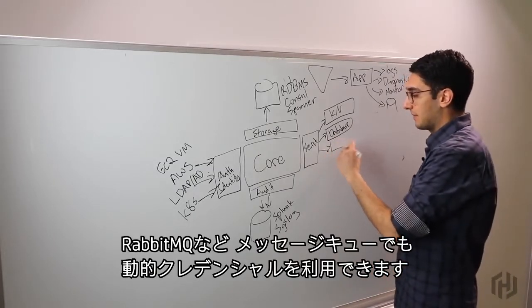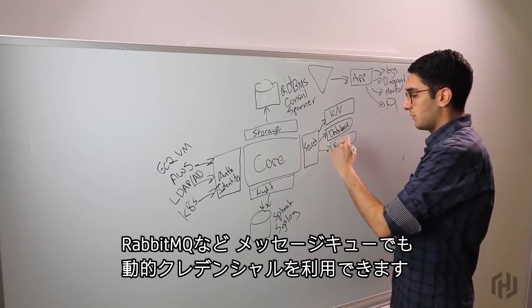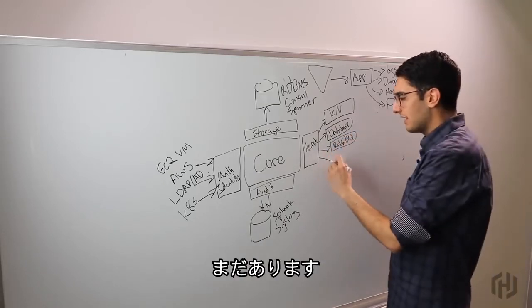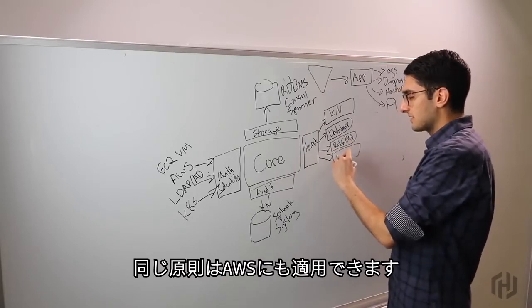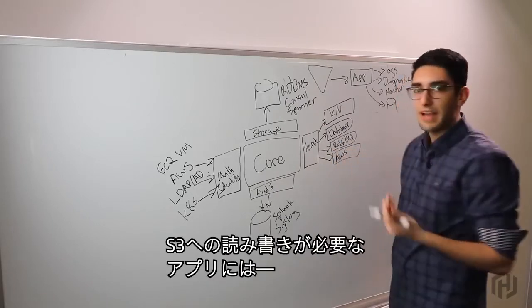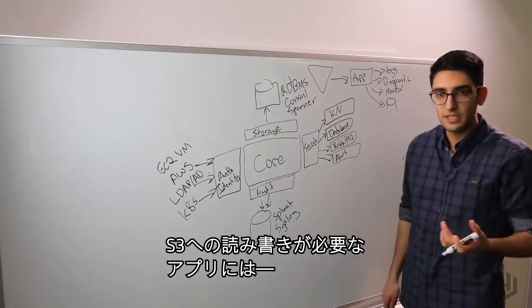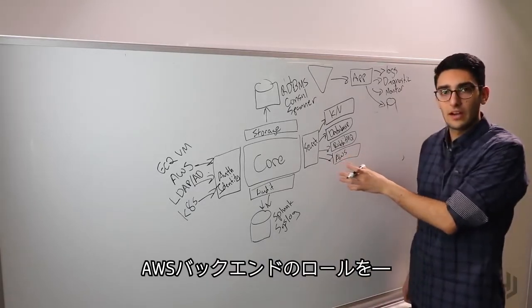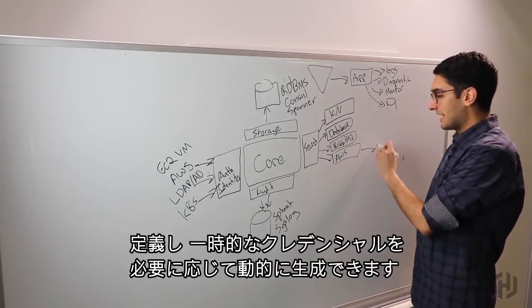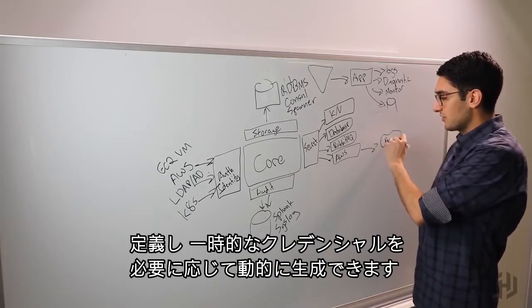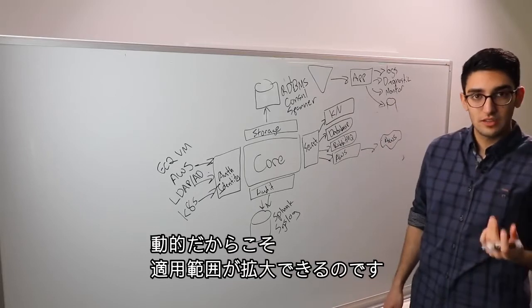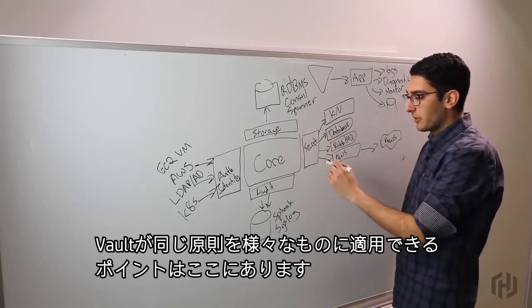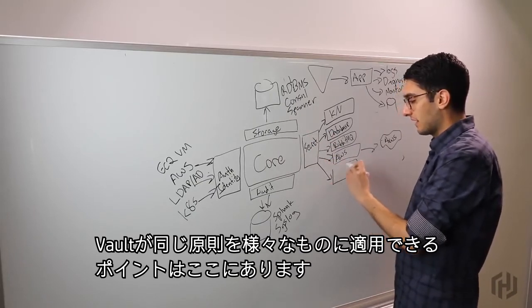We have things like RabbitMQ, so maybe we're doing dynamic credentialing for our message queues. But this kind of goes on. You can even apply the same principle to something like AWS. We might have applications that need to read and write from S3, but we don't want to give them long-lived access to IAM. So instead we define a role in our AWS backend and we'll go and dynamically generate short-lived credentials as needed. So this extends that dynamic secret paradigm. This is an extension point that allows Vault to apply this same principle to many different things.